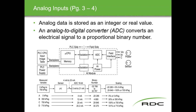Starting with analog inputs — analog data is stored as an integer or a real value, either a whole number or a number with a decimal place. An analog-to-digital converter is the component inside the AI module that converts the electrical signal from a field device, like a transmitter, into a proportional binary number. This is all within the AI module in the rack — your Allen Bradley, Honeywell, Delta V, or whatever it happens to be. The AI module connects to the processor of the PLC and shares data back and forth.